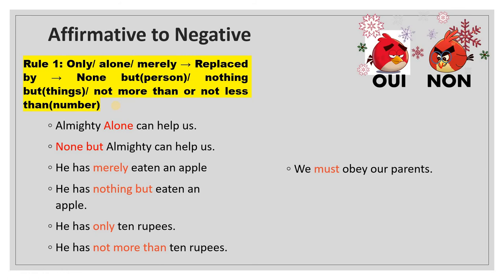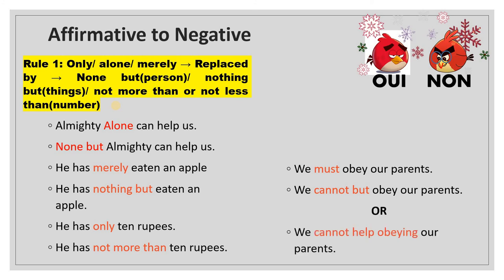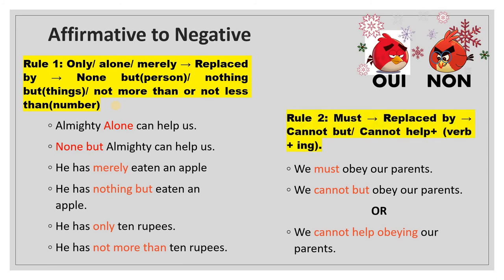'We must obey our parents' is affirmative. The negative form is either 'We cannot but obey our parents' or 'We cannot help obeying our parents.' So when using the word 'must' in affirmative, we change it to 'cannot but' or 'cannot help' plus the verb in the -ing form.